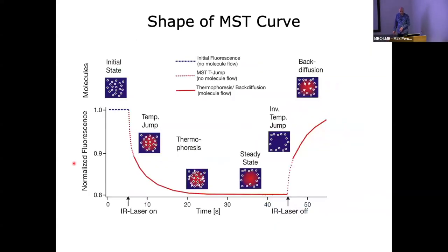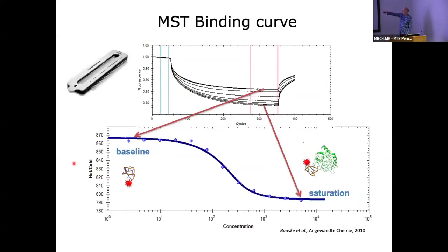What does the data look like? You have the initial fluorescence before the IR laser is on. When you turn on the laser you get a temperature jump in the fluorescence, and then further movement as molecules diffuse away. When you turn off the laser you get diffusion back into the space. If you have the same concentration of labeled material in each capillary but increase the unlabeled binding partner, because you get changes in size or charge you get differences in the thermophoretic movement. We can look at the changes in fluorescence during this process and fit that to equations to get binding constants.